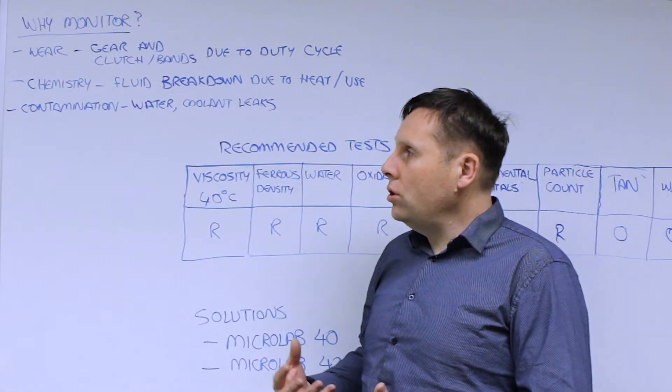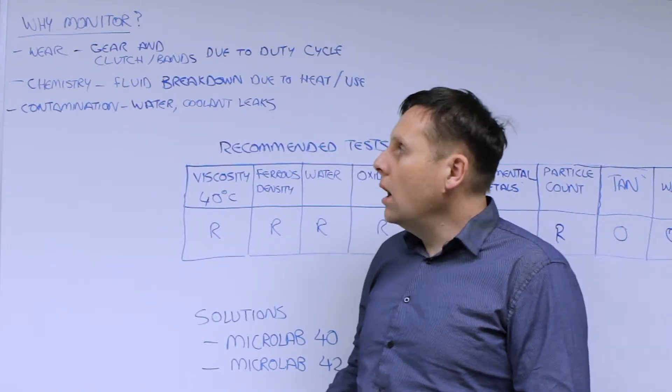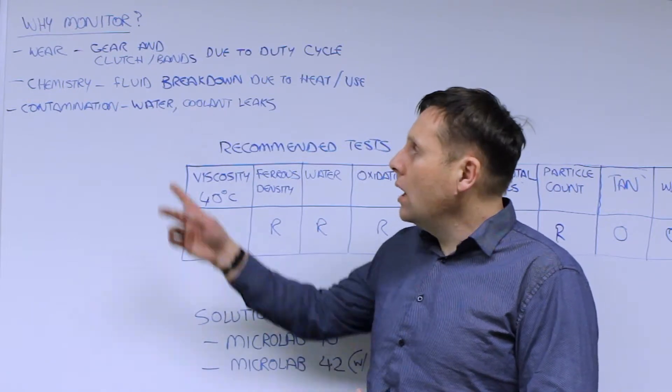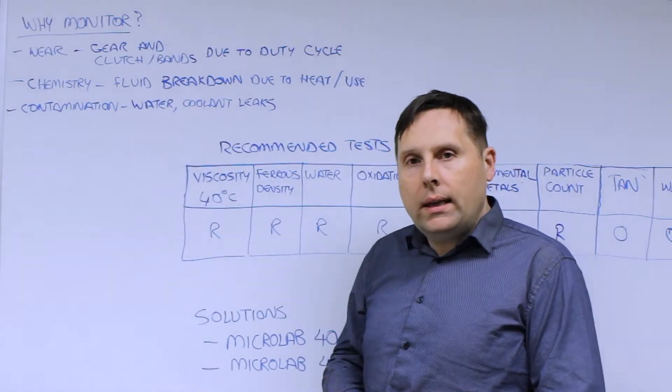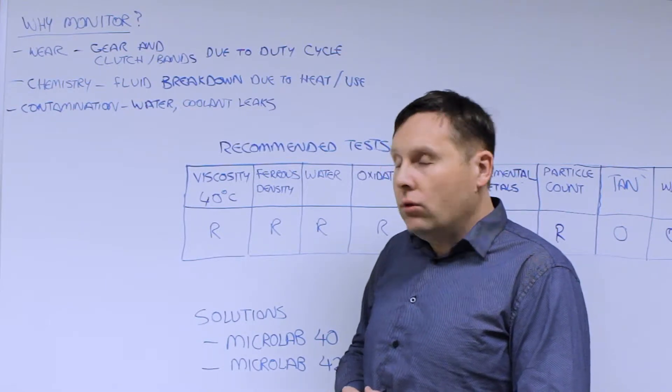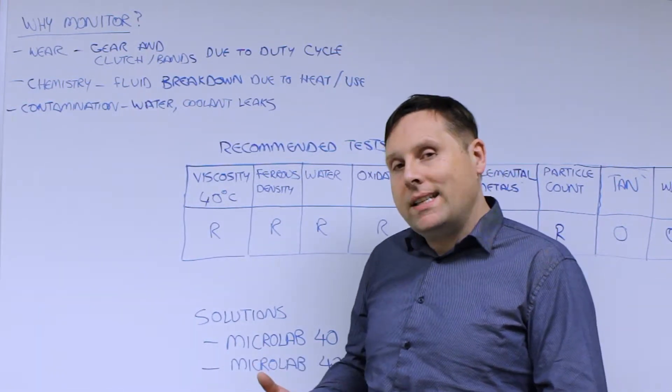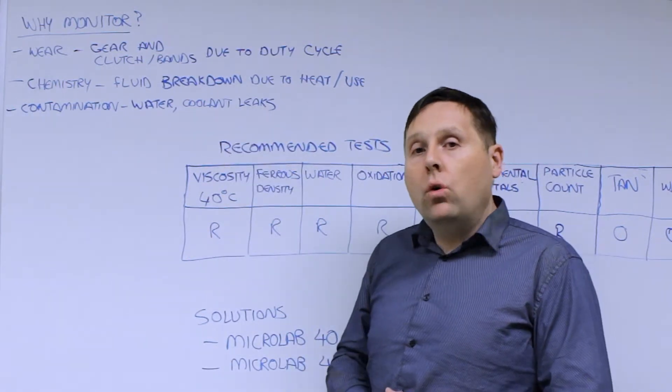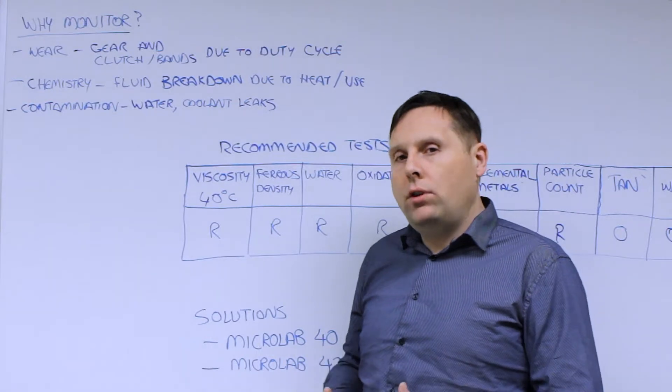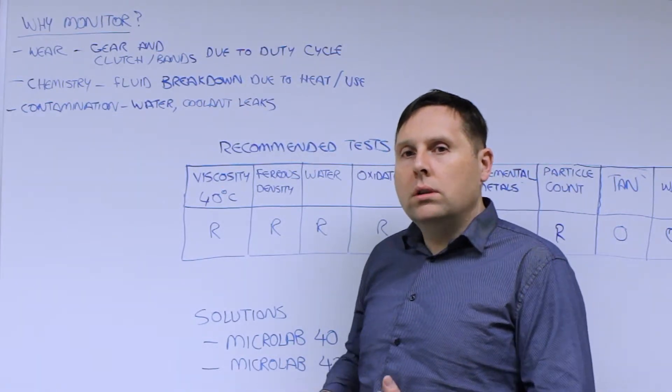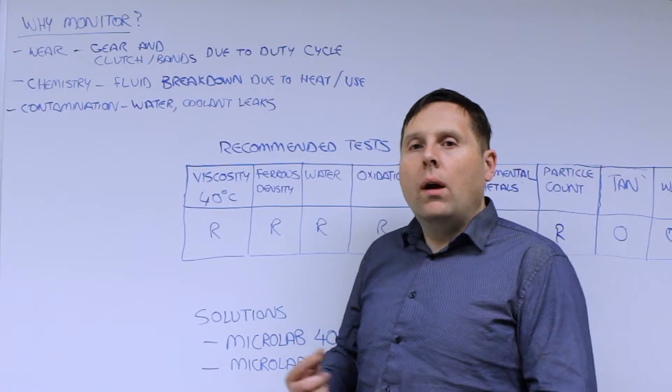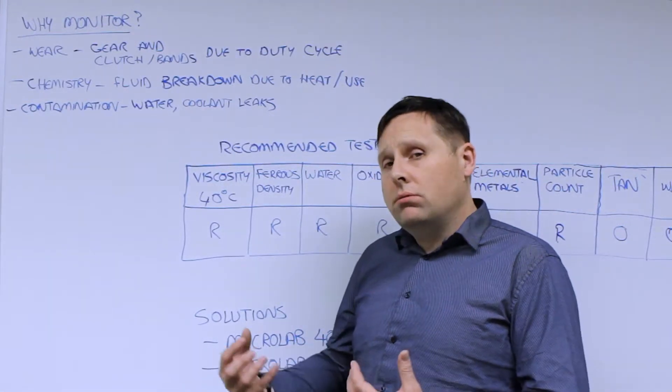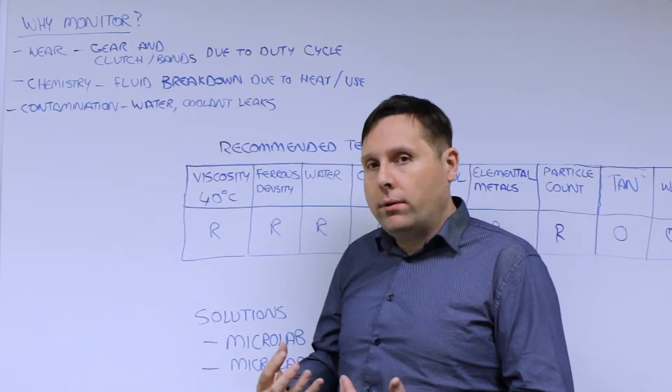You also have contamination issues. In a transmission, you can often have it at the lower section of the vehicle. If it's not well sealed or you start to have seal integrity issues, you can get water getting into the system, the most aggressive ingression contaminant. You can also have sand and dirt getting in that can lead to excessive wear. And you can have coolant leaks, especially if you have a heavy duty transmission being cooled using an intercooler with the coolant from the engine. If there's any leaks there, that's going to get into the system. We want to be watching for all of these when we monitor fluid.